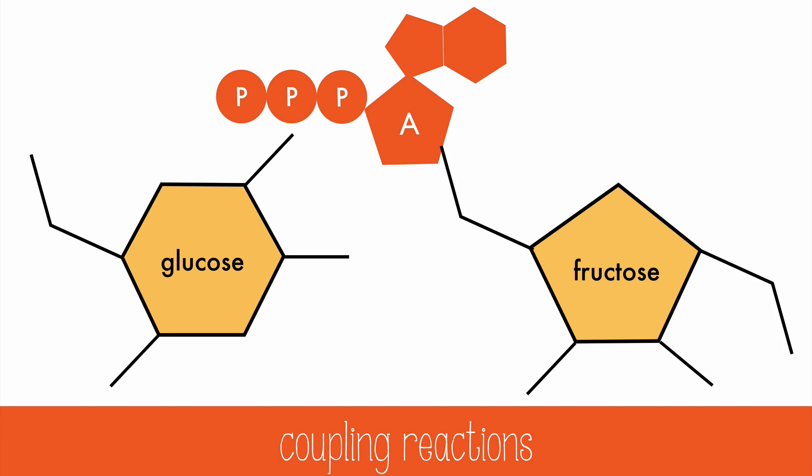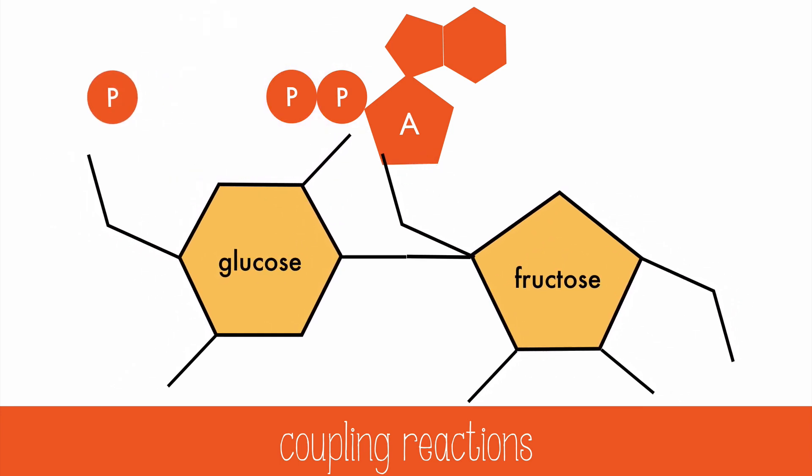For example, ATP is needed to make glucose and fructose bond to form sucrose.